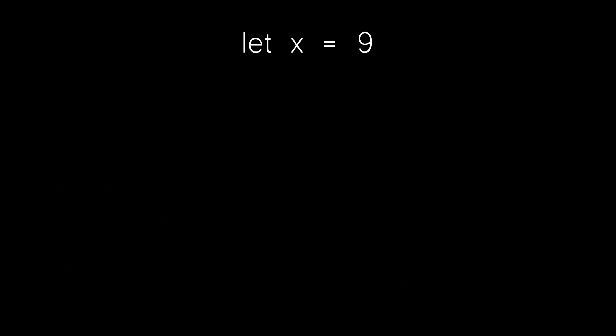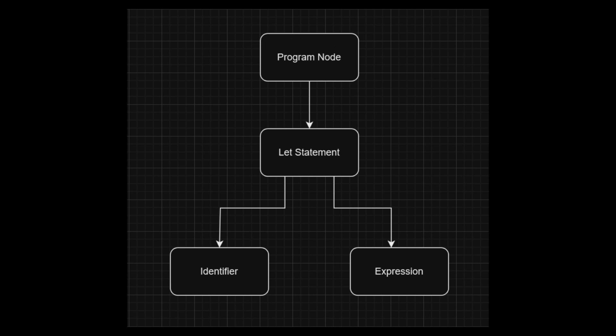With this in place, a let statement like let x equal to 9 could be represented in our tree like so. The program node will have an array with one statement — a let statement. The let statement will have an identifier node and an expression node corresponding to the value. Now that we can build a very simple tree from a let statement, we can start work on our parser. Head to the next video and we will get started creating that.